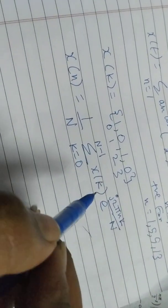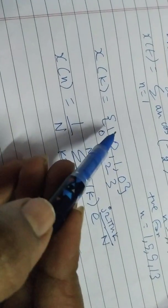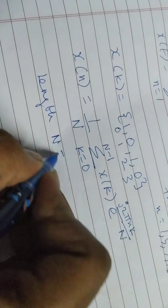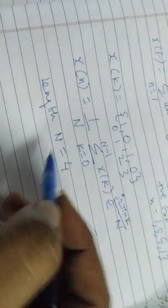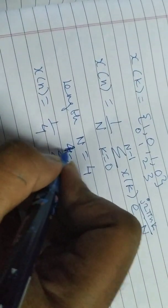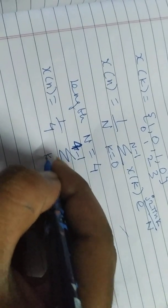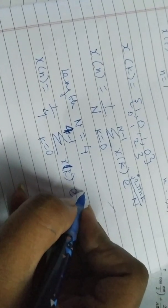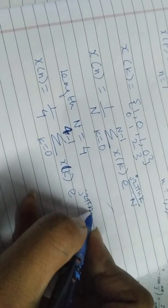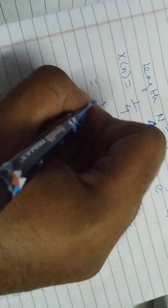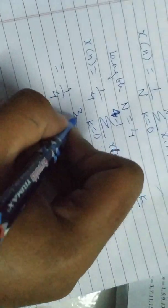Using this formula — if you look at the sequence and count, it will be 1, 2, 3, 4, so the length N is equal to 4. We substitute that in, so we get x of n equal to 1 over 4, summation from k equals 0 to 3 of x of k times e to the power j 2 pi n k by 4.